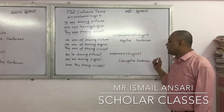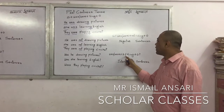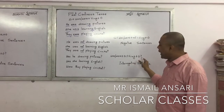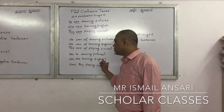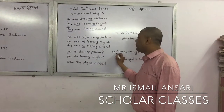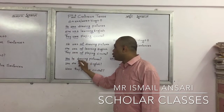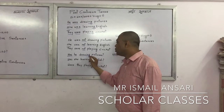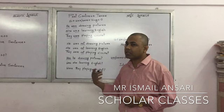Then we have the interrogative sentence in past continuous tense. The formula is: was/were plus subject plus first form of the verb with -ing plus object and question mark. Example: Was he drawing pictures? Here 'was' is our helping verb, placed before the subject 'he'. 'Drawing' is the verb form with -ing denoting the continuity of the past continuous tense.